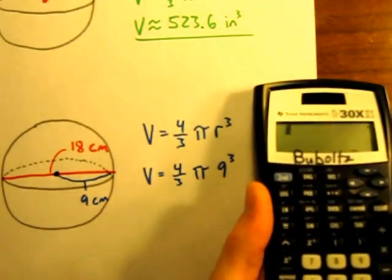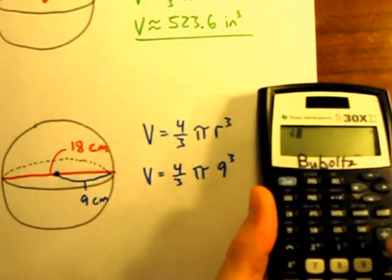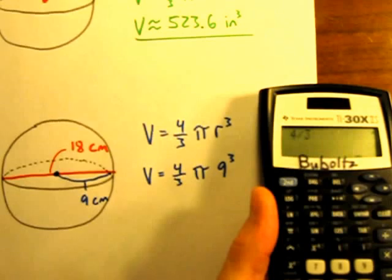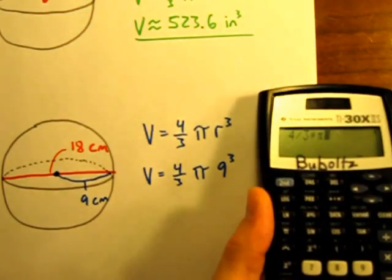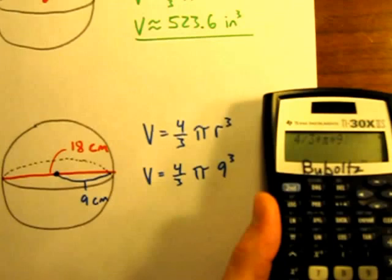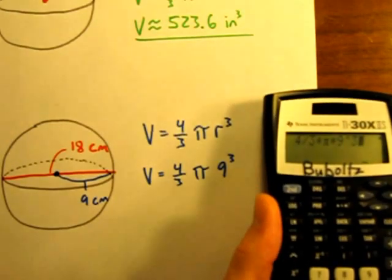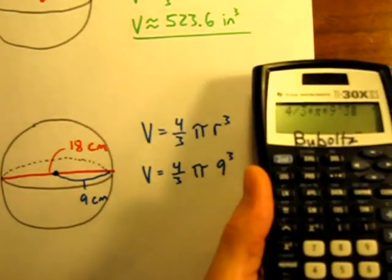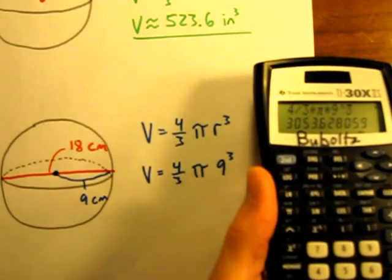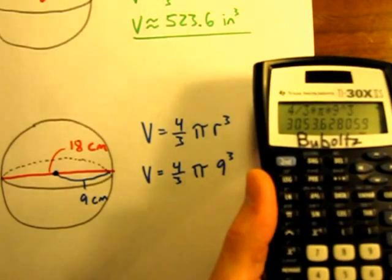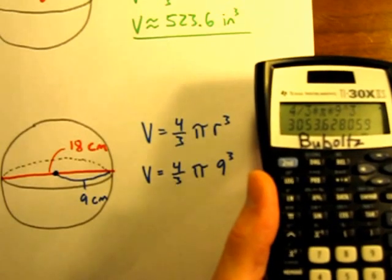And so let me clear that out. And again, 4/3 is 4 divided by 3 times π times 9 raised to the third power. Don't forget to raise it to the third power. 9 raised to the third power equals 3,053.628.